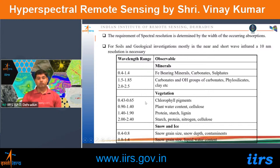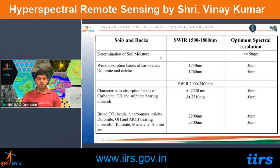Spectral resolution requirements depend on the width of the absorption feature. For soil and geological applications, 10 nm resolution in near and short-wave infrared is needed — iron-bearing minerals at 0.4–1.4 µm; carbonates, hydroxyl, phyllosilicates, and clays at 1.5–1.85 and 2–2.5 µm. For vegetation, chlorophyll at 0.43–0.65 µm; plant water, cellulose, protein, starch, lignin at 0.9–2.4 µm. For snow grain size and liquid water content, 0.4–1.4 µm. Soil moisture requires ≤50 nm in short-wave infrared; carbonate bands at 1740–1760 nm need 10 nm resolution.